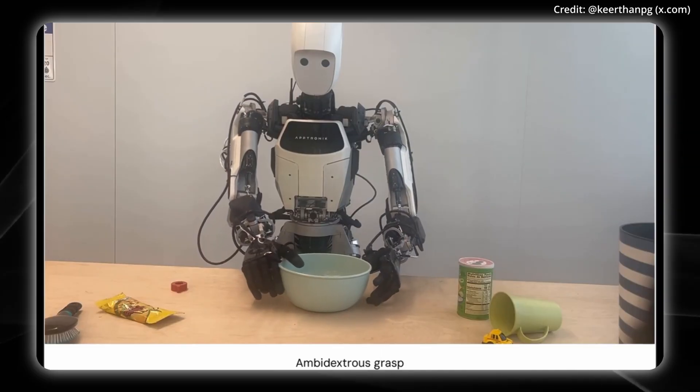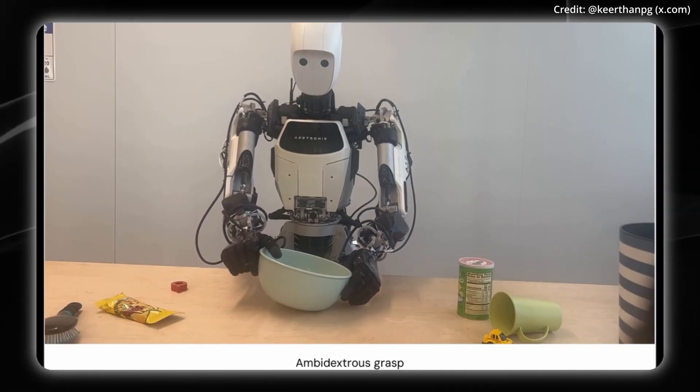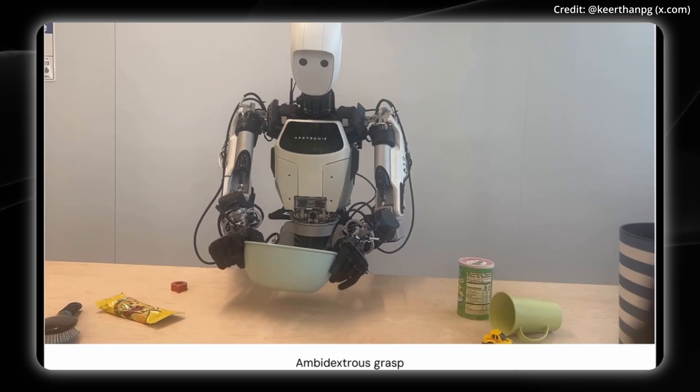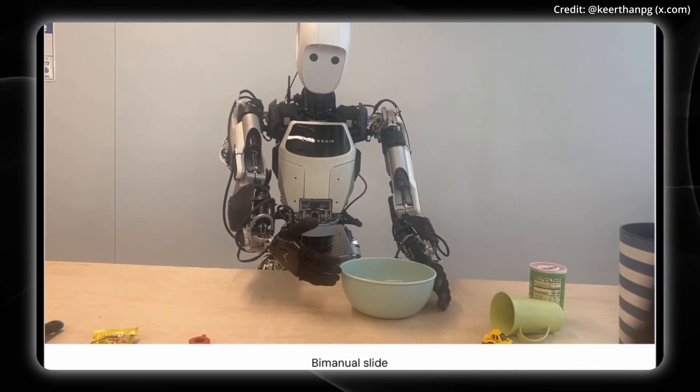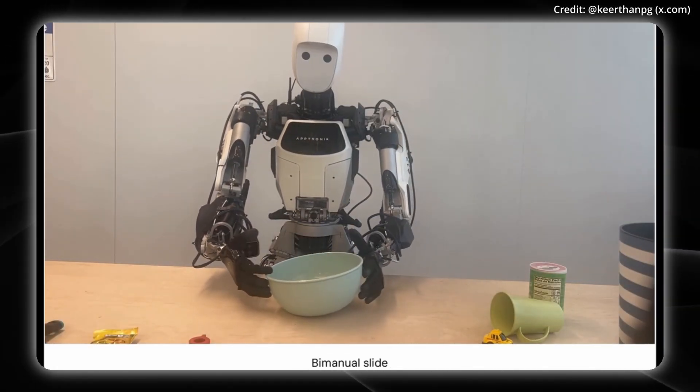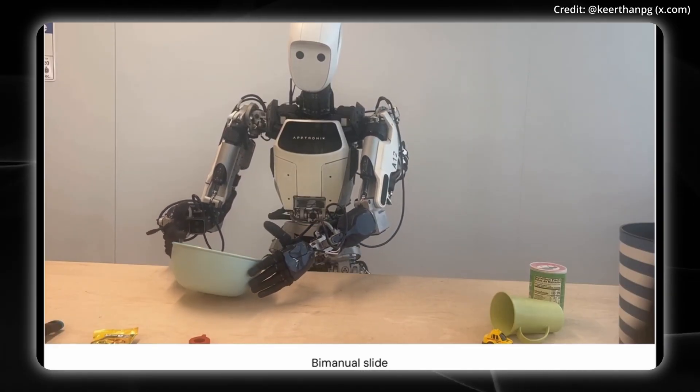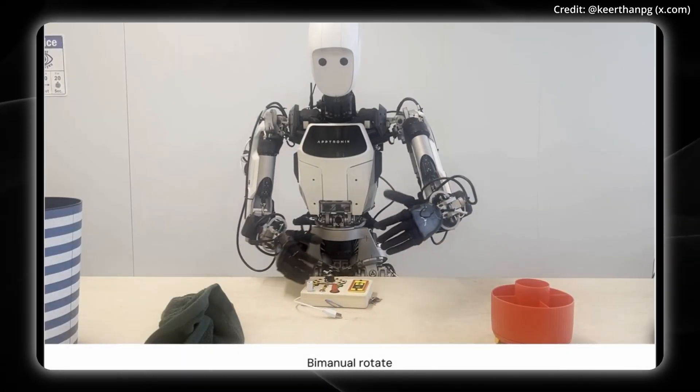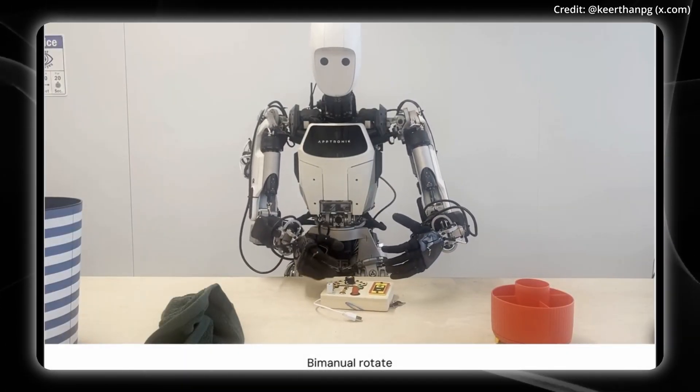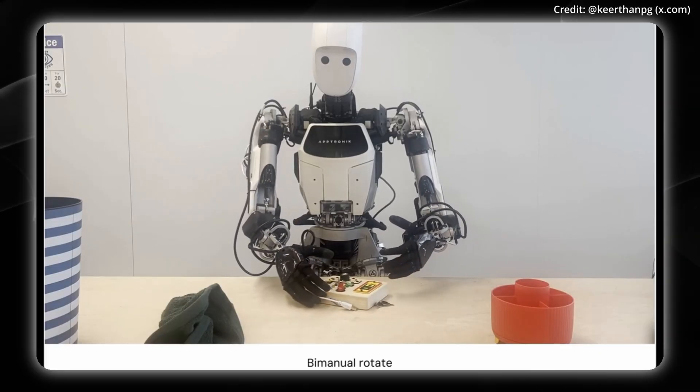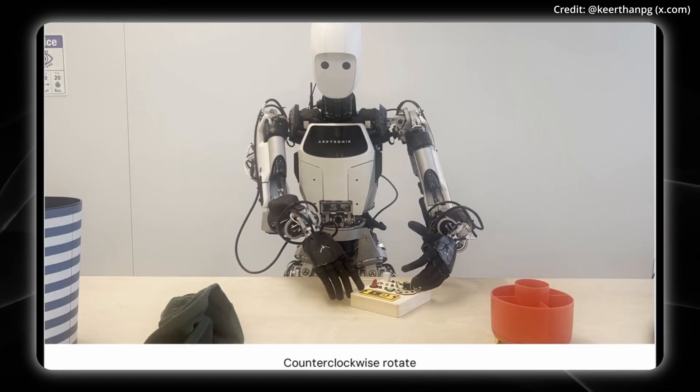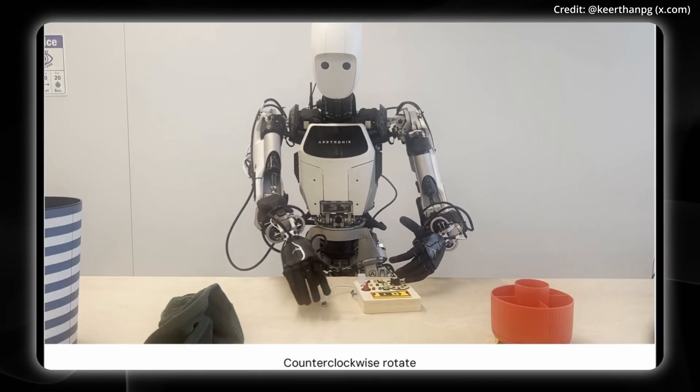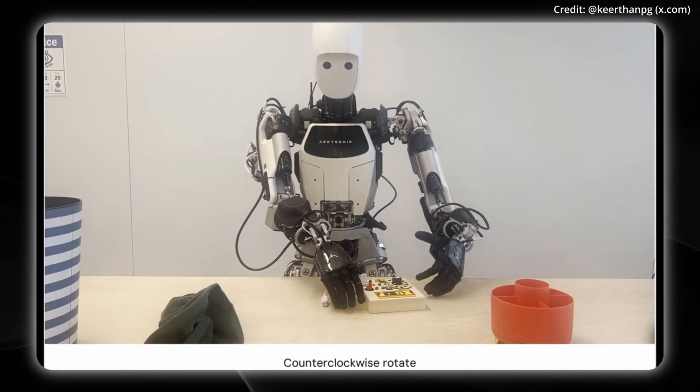Next, an ambidextrous grasp where one finger is basically holding the ball against the hand, and the other is kind of positioning it with both hands working there together. Another bimanual slide using one to hold it, another to push. Two hands working together, real-time figuring this out. And here's a bimanual rotation with two hands again. So this is generalization happening right before you. Multimodal strategies and a counterclockwise rotation. This is all just with text prompting, telling this robot to do this, and it figures it out.